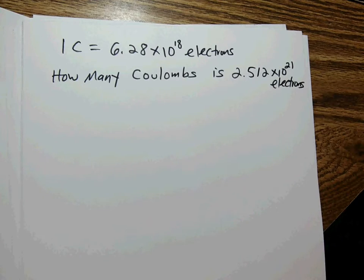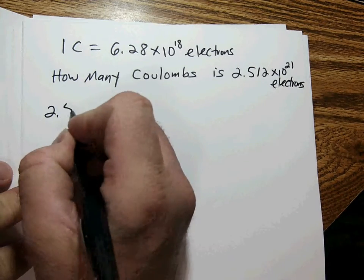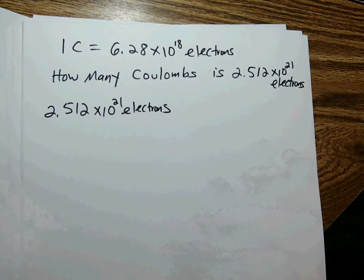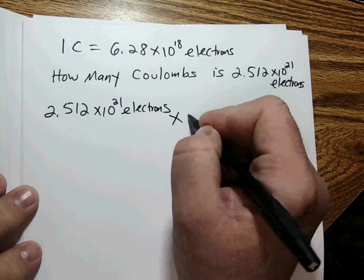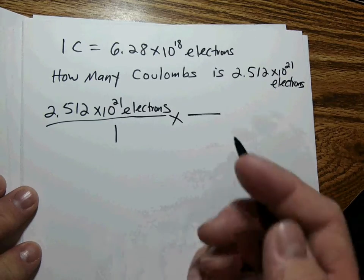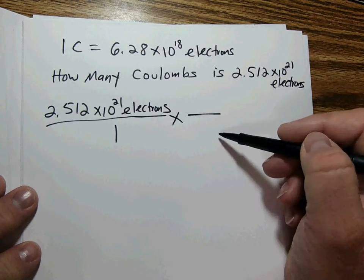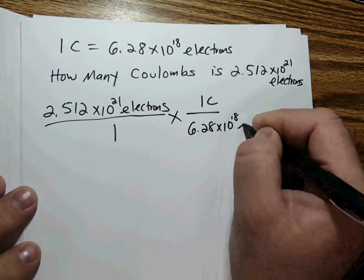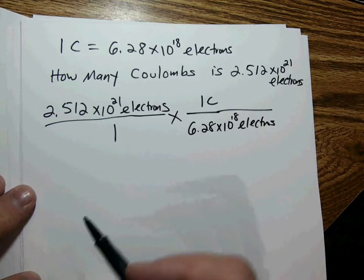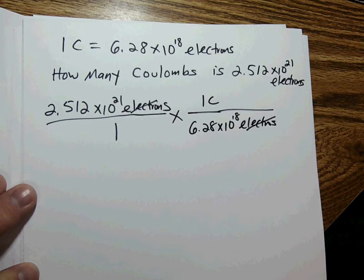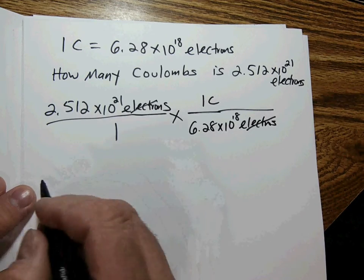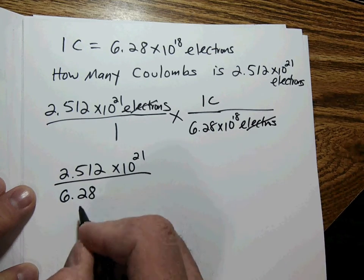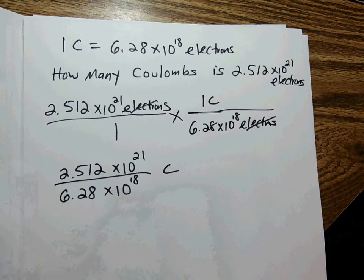We have 2.512 times 10 to the 21 electrons and we want to convert to coulombs — just switching units. We multiply by a unit ratio with coulombs on top and electrons on the bottom: 1 coulomb over 6.28 times 10 to the 18 electrons. Electrons cancel, and the only unit left is coulombs. We're left with 2.512 times 10 to the 21 divided by 6.28 times 10 to the 18.